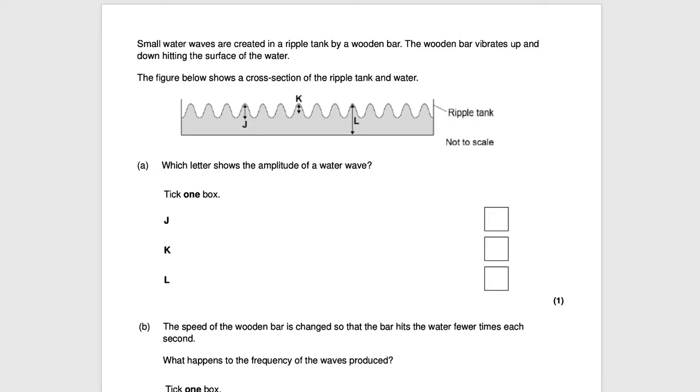Hi everyone and welcome to our video on some exam questions related to waves. Our first question states small water waves are created in a ripple tank by a wooden bar. The wooden bar vibrates up and down hitting the surface of the water. The figure below shows a cross-section of the ripple tank and water. Which letter shows the amplitude of a water wave? We're given three letters here and we need to decide which one is the amplitude.